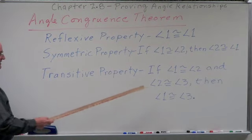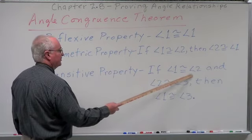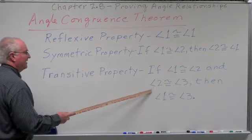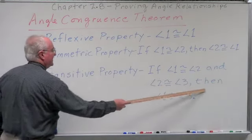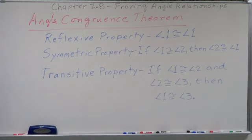Transitive property states if angle 1 is congruent to angle 2 and angle 2 is congruent to angle 3, then angle 1 is congruent to angle 3. The identical triplet property.